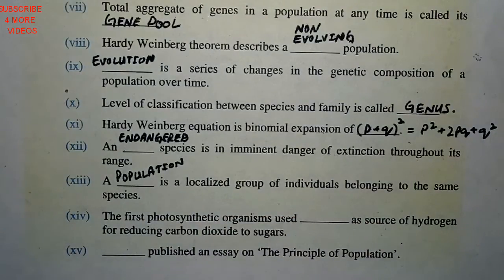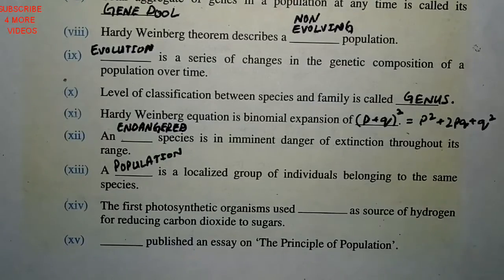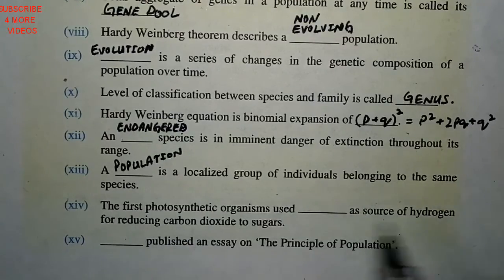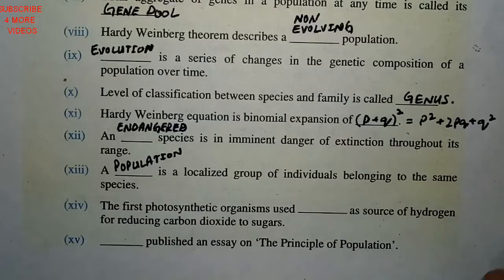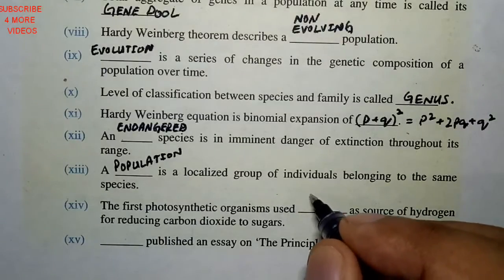The next fill-in-the-blank: the first photosynthetic organism used dash as a source of hydrogen for reducing carbon dioxide to sugars — the answer is hydrogen sulfide.